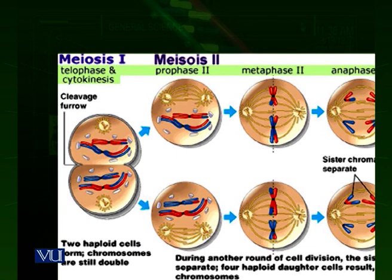Meiosis II occurs in the two cells already produced by meiosis I. You can see the first cell is dividing and the second cell is also dividing. Meiosis II is just like mitosis. In meiosis II, the first phase is prophase — we call it prophase II because it is the prophase of meiosis II.